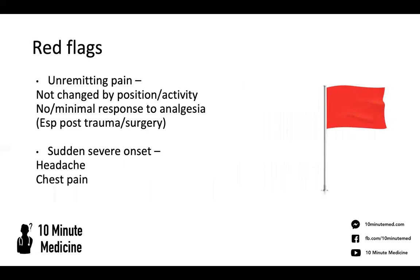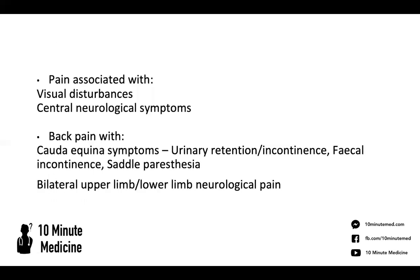There are red flags to assess before prescribing pain medication. If the pain is unremitting and not improved with any analgesia, position, or activity, that's especially relevant post-trauma or surgery. Any sudden or severe onset pain — severe headaches or chest pain — needs attention; with chest pain we're thinking ACS or MI, and with headaches we want to rule out subarachnoid hemorrhage. Also watch for pain associated with visual disturbances or central neurological symptoms, strokes, or bleeds. With back pain, always assess for cauda equina symptoms.